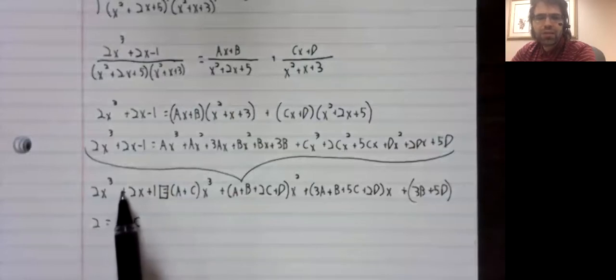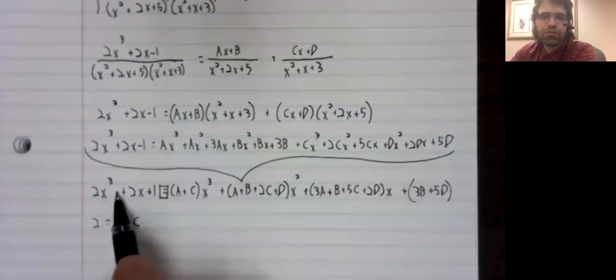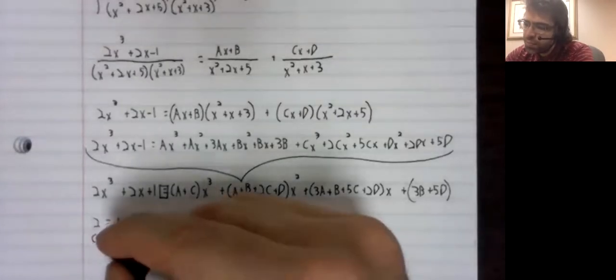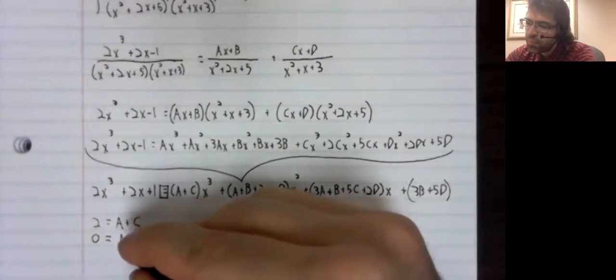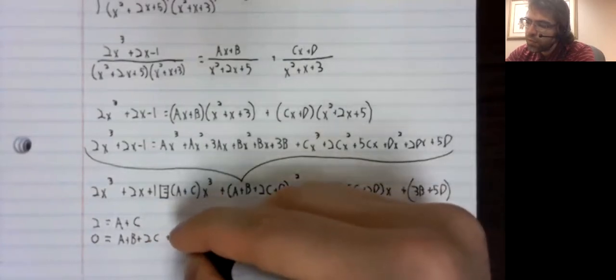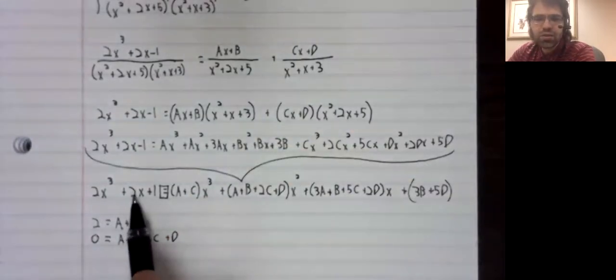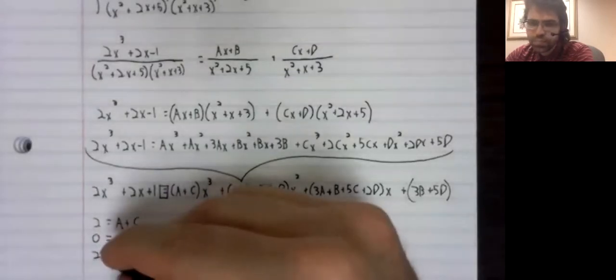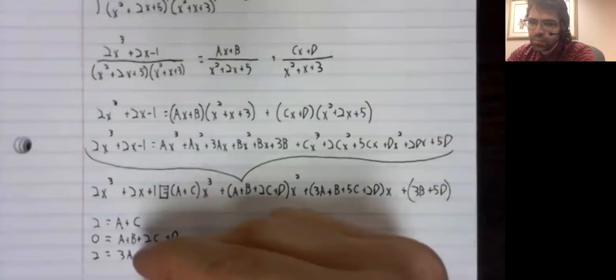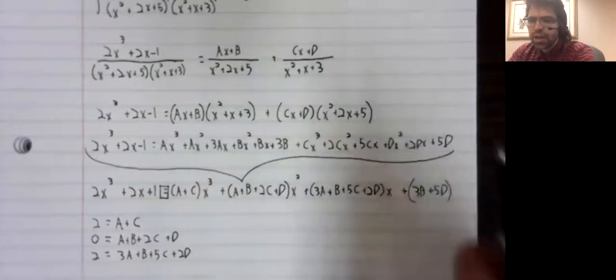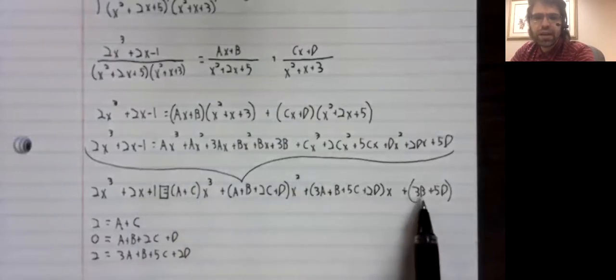This is zero x squared. So the zero here, we of course don't have it written in, has to equal this. Two x, so this two has to equal this. And our constants have to be equal.